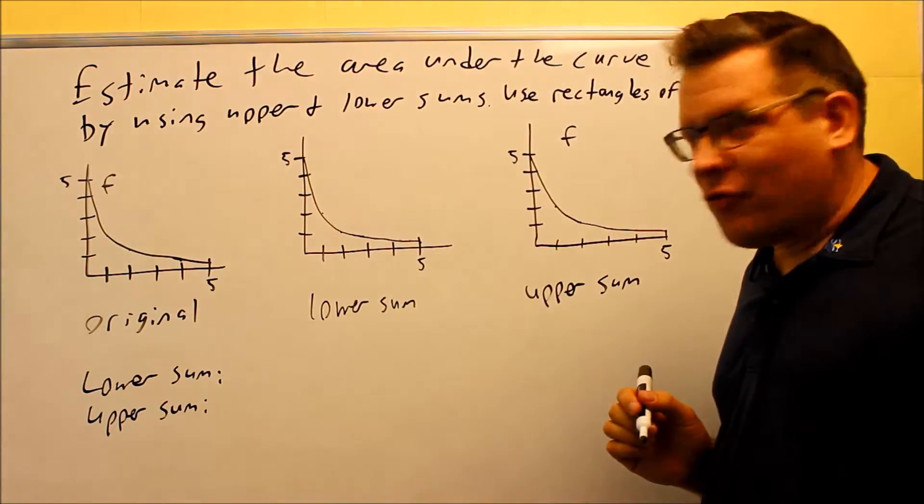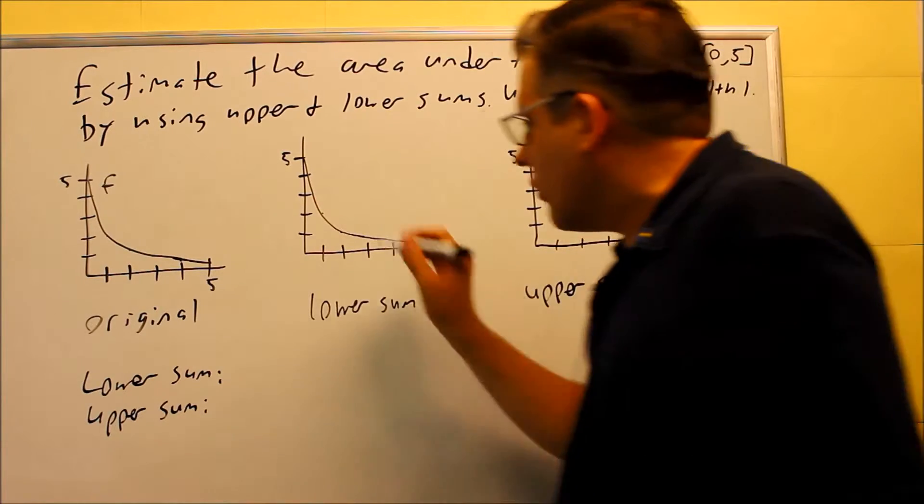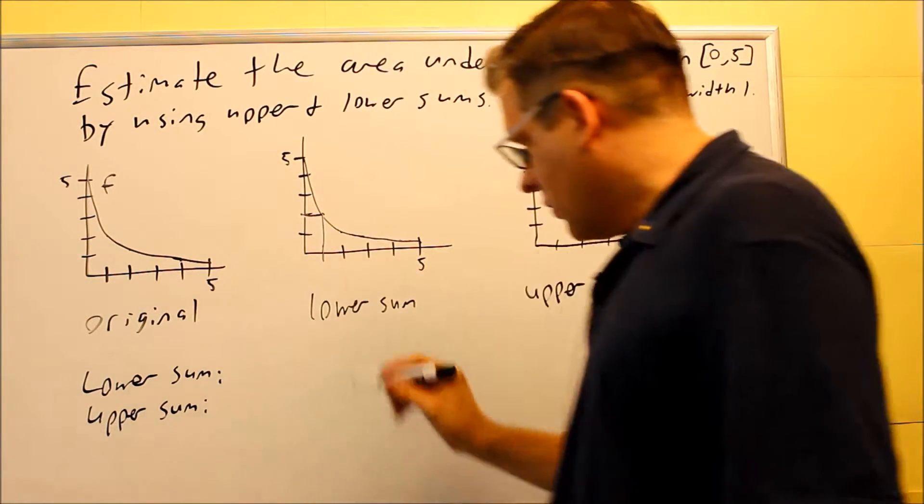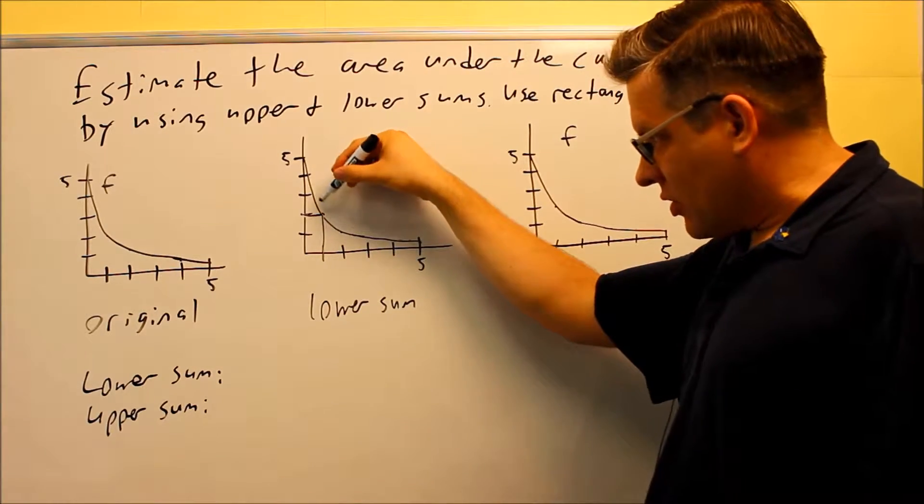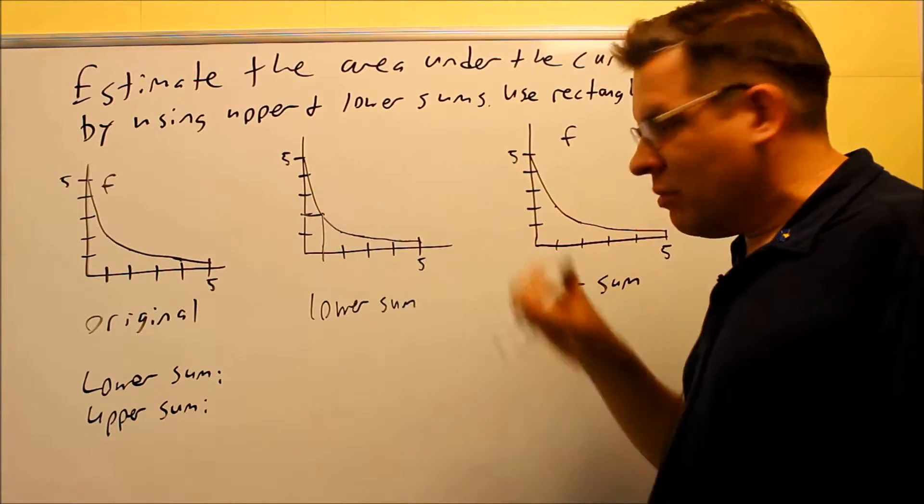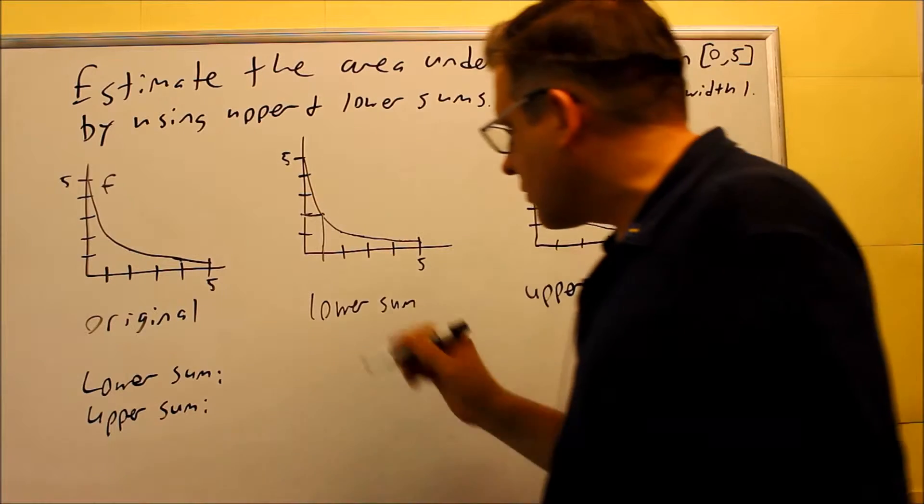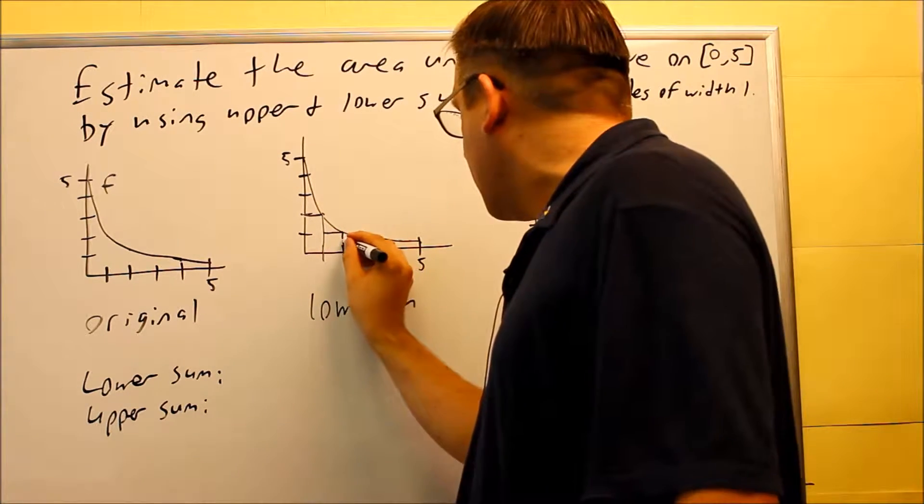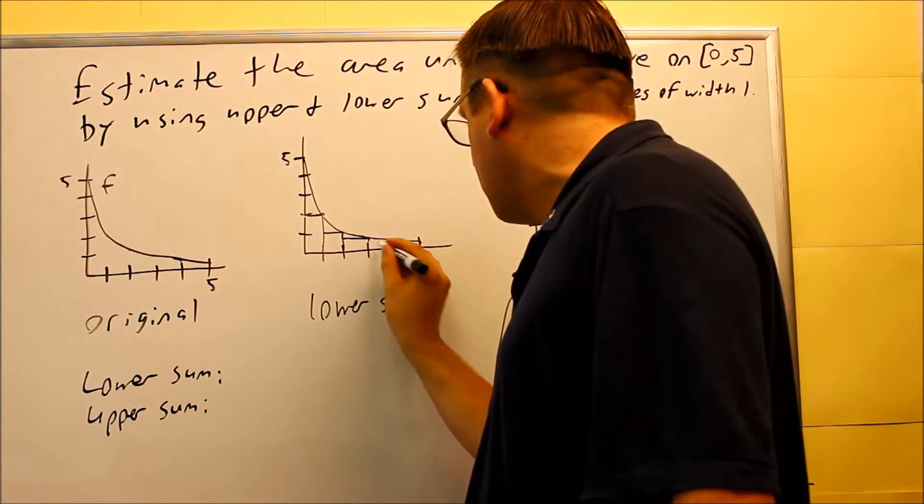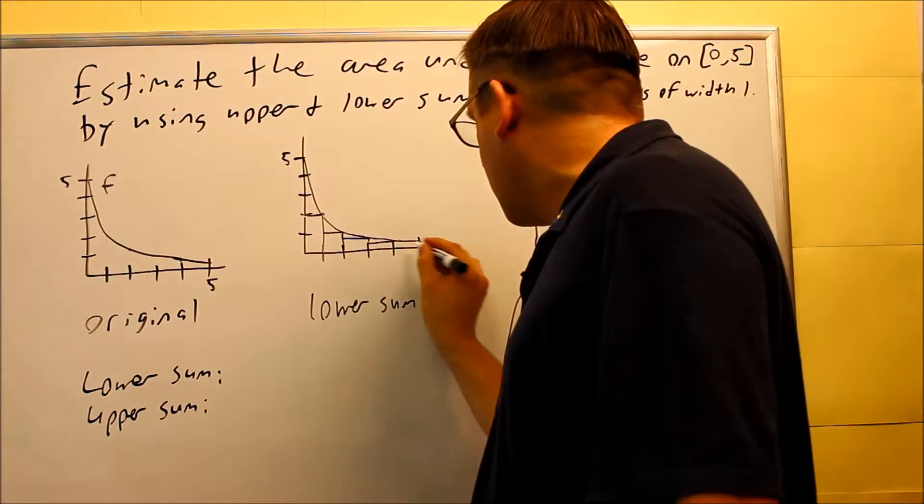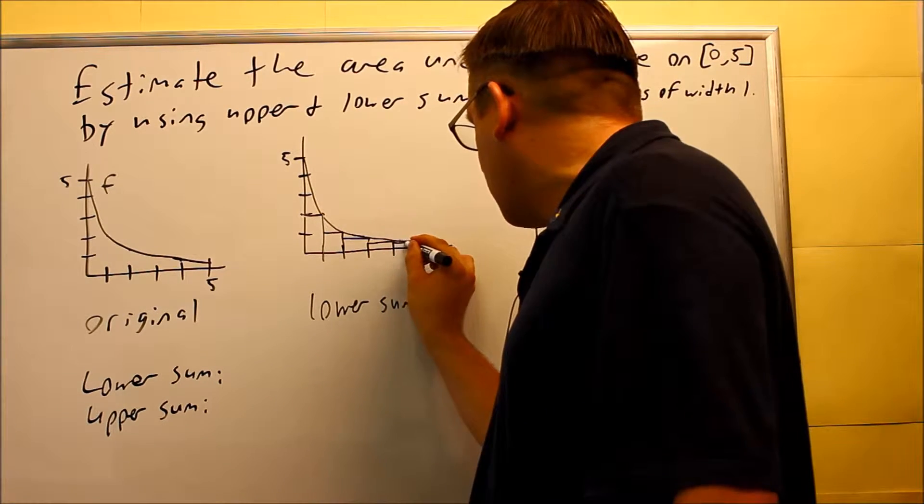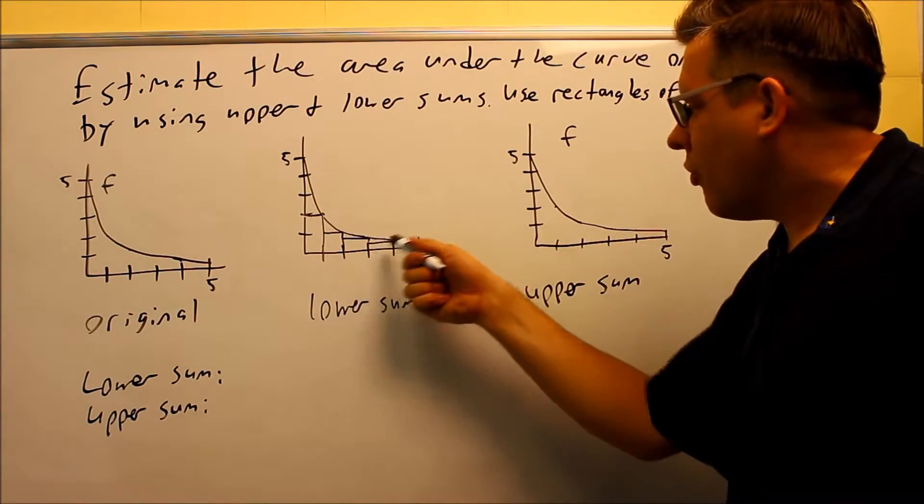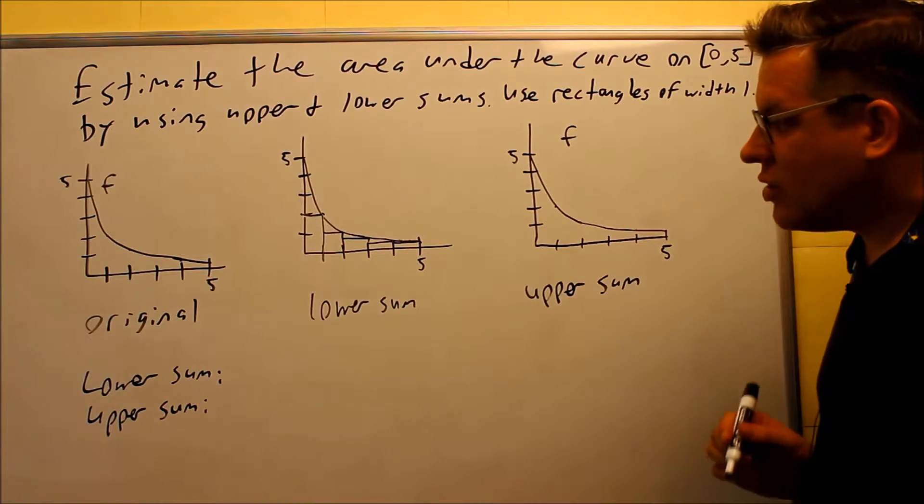The rectangles have to all fit underneath the curve. So right here, here's the first one. Starts at 0, but the height has to be underneath the graph itself. Then here's the next one, this one's right here, and then we have this one, then we have this one, and then finally the very last one on the end there. So we have 1, 2, 3, 4, we have five different rectangles squeezed in there.